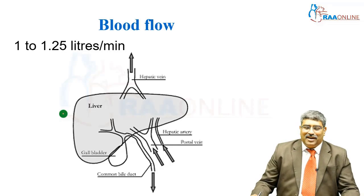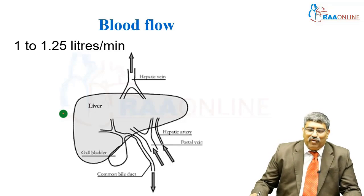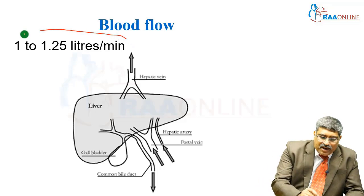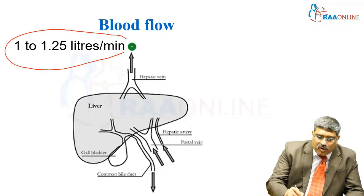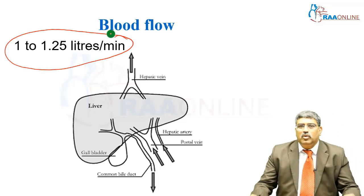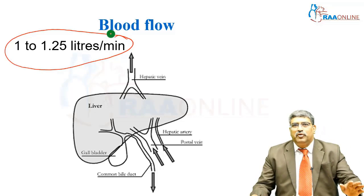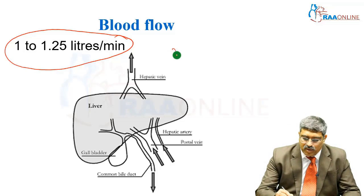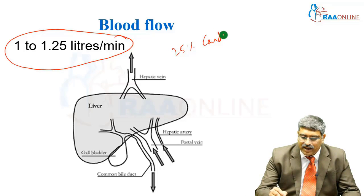Coming to the hepatic blood flow, the normal hepatic blood flow is about 1 to 1.25 liters per minute, which forms about 25% of the cardiac output.